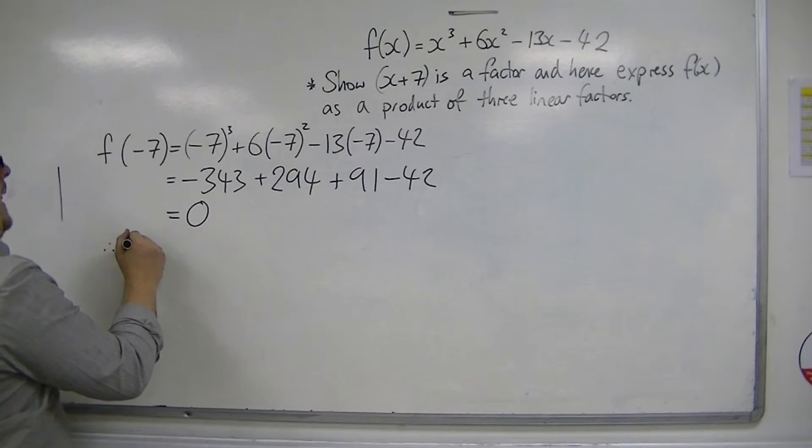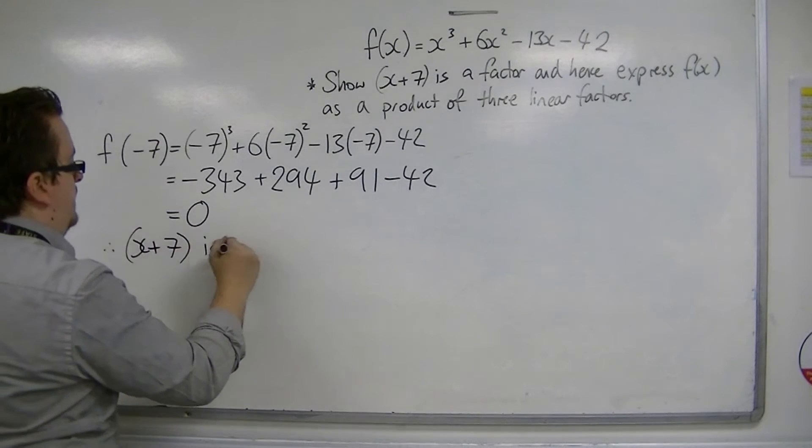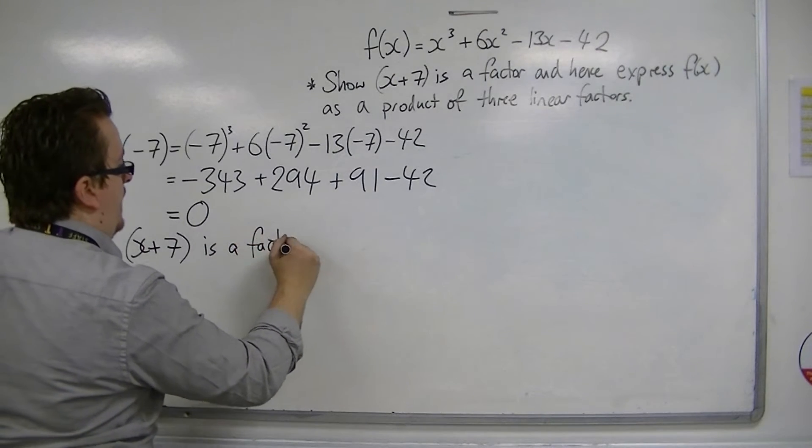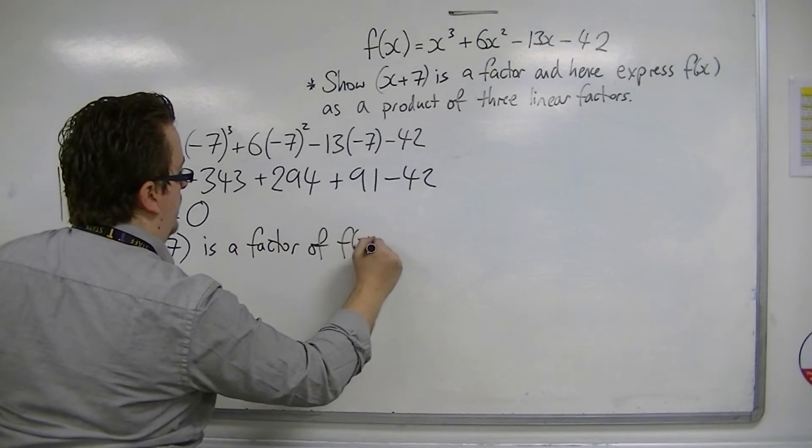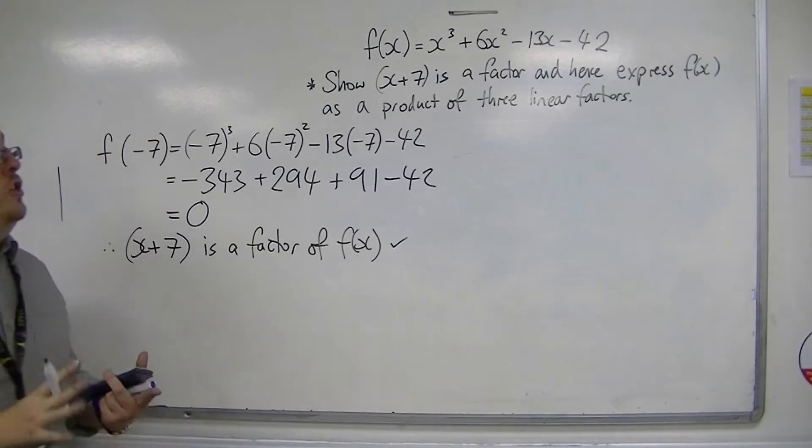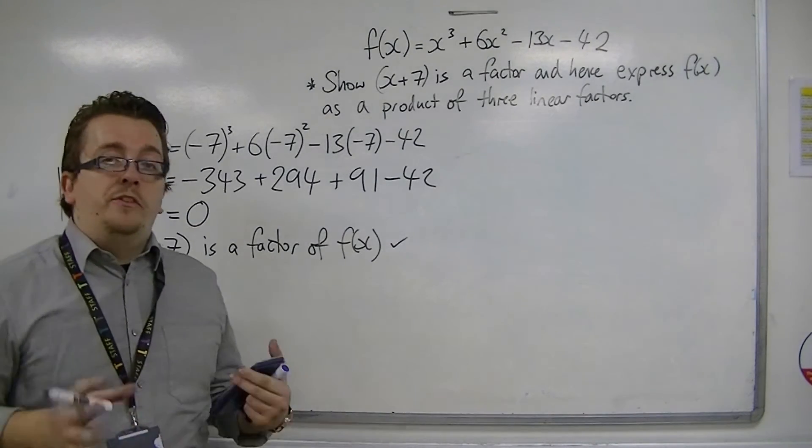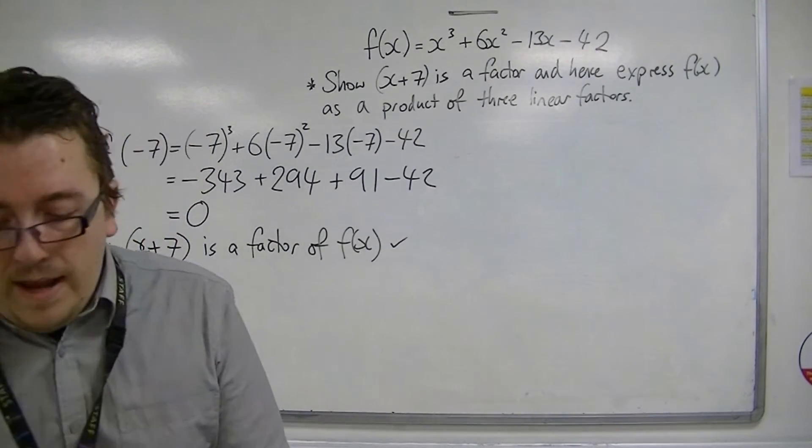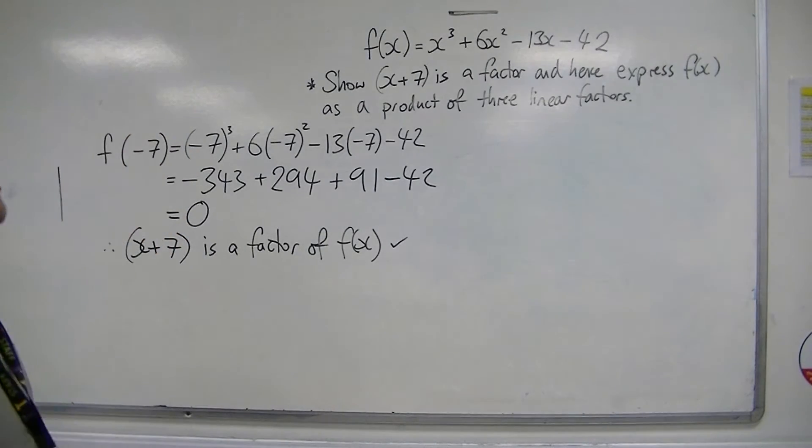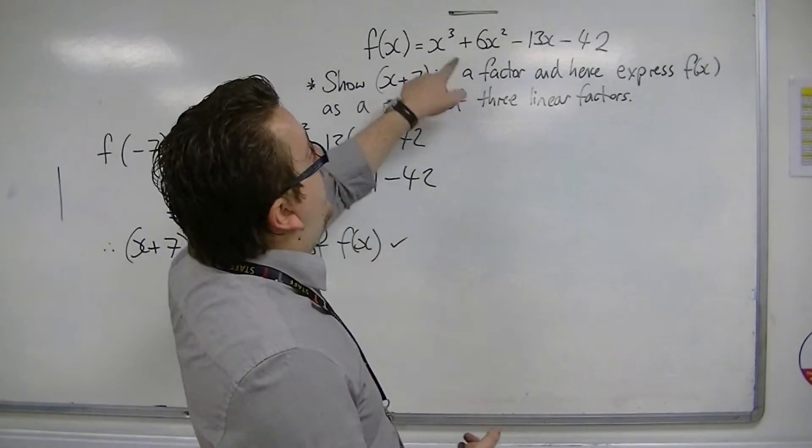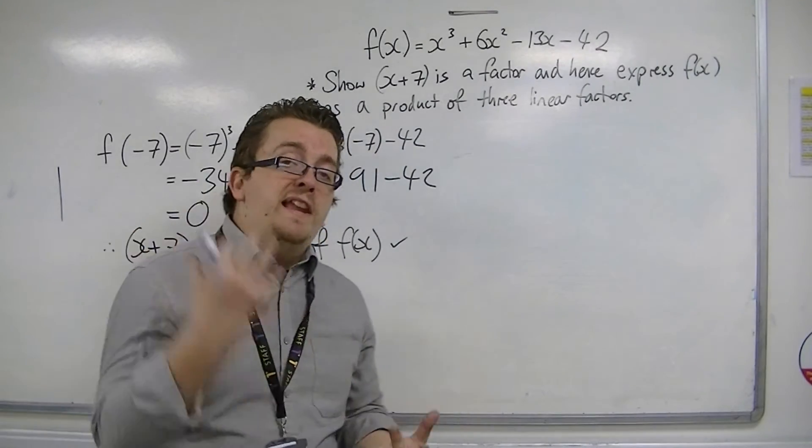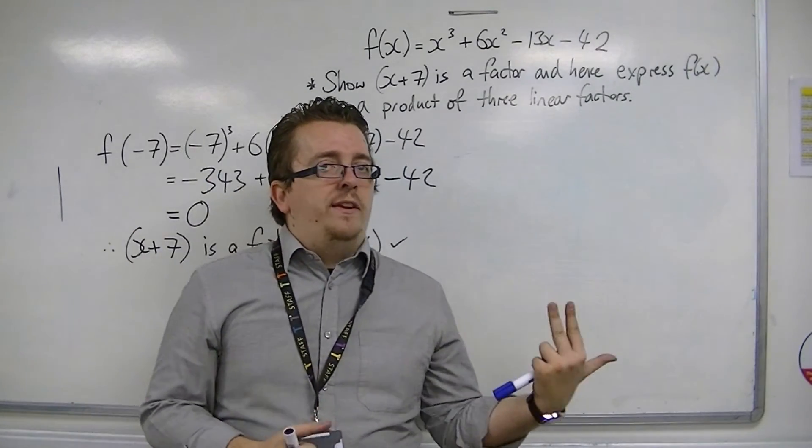Therefore, x plus 7 is a factor of f of x. Okay, so tick, we have shown that x plus 7 is a factor. The next job is to be able to find out, or be able to write, this cubic as the product of a linear term and a quadratic term.